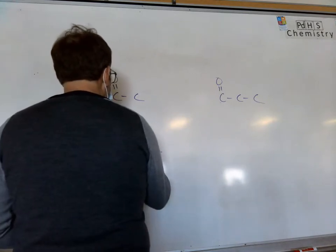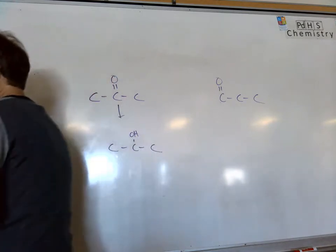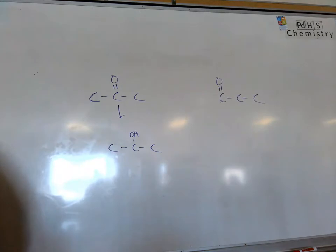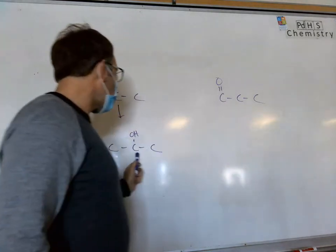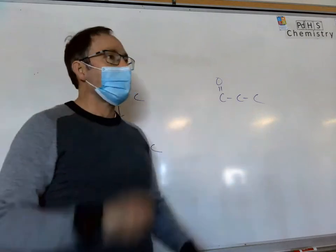Whenever you see a C double bonded to an O, you're going to get it back to an alcohol. Now, we're moving where the functional group is, from the second carbon to the first carbon.